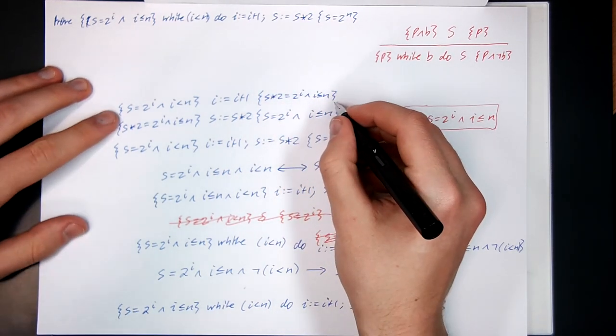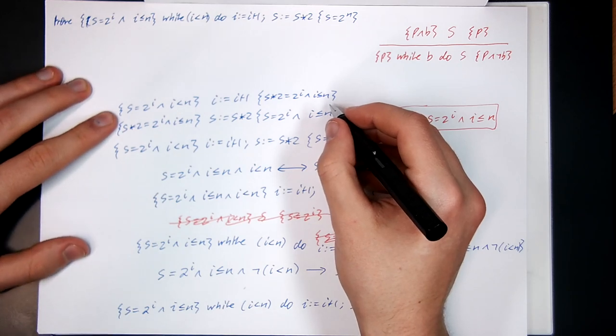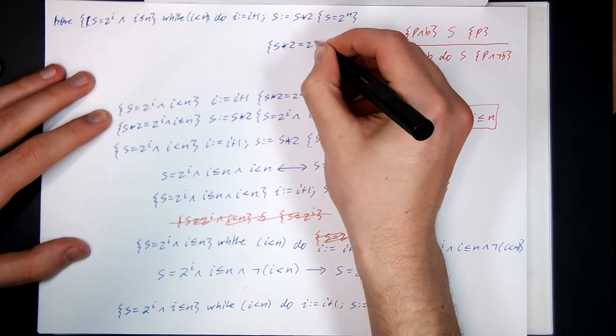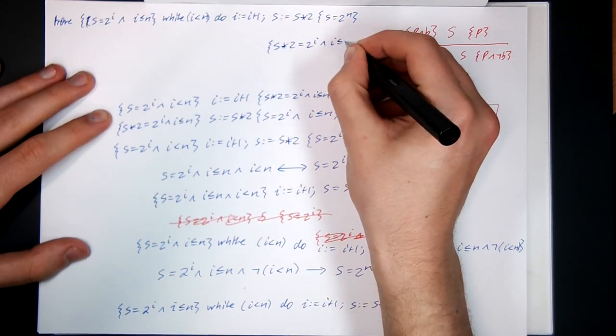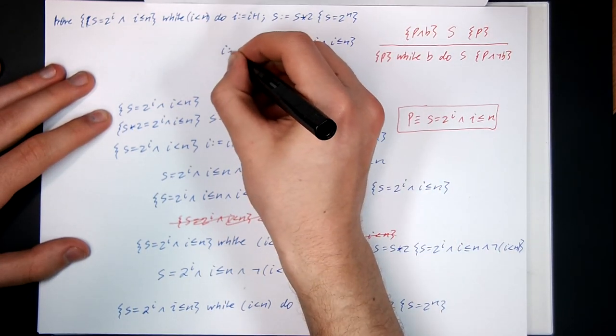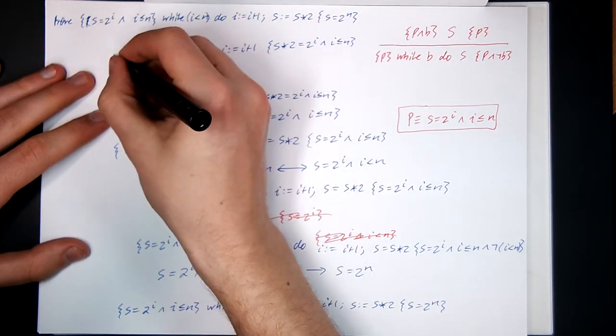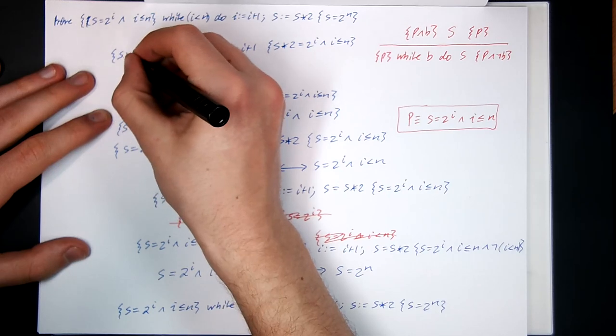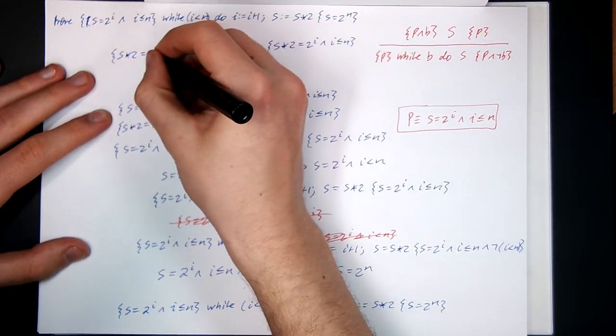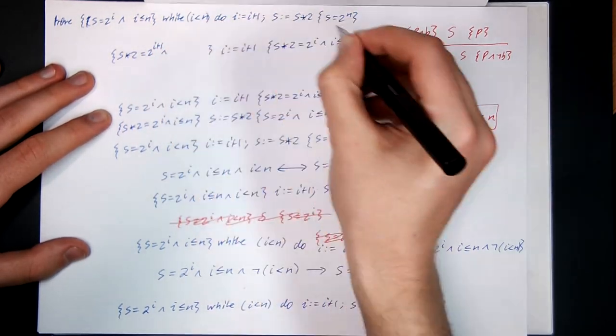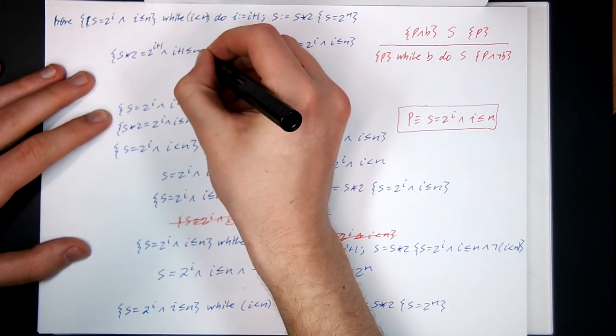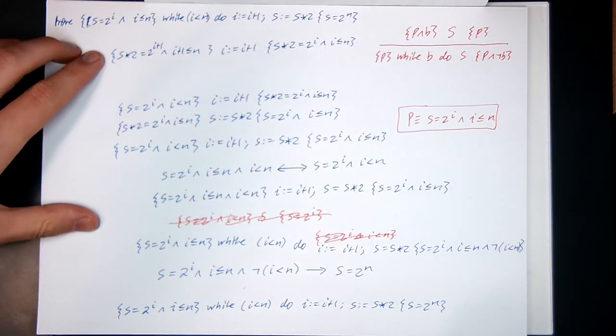How can we prove this condition? I guess by doing assignment rule backwards as well. So we can copy up the post. I is assigned to be I plus 1. So do assignment rule backwards. Replace the I's with I plus 1's. S times 2 equals 2 to the I plus 1 and I plus 1 less than or equal to N.